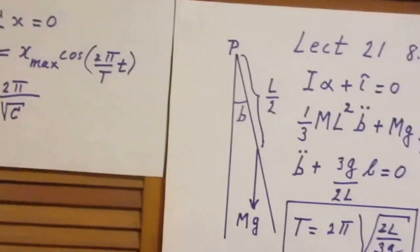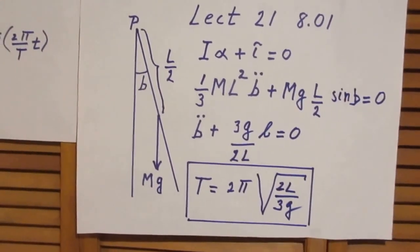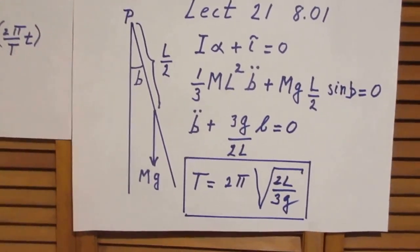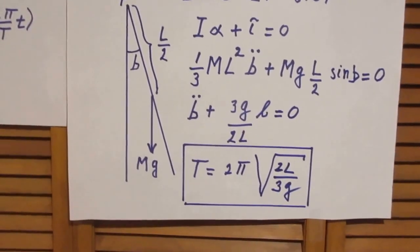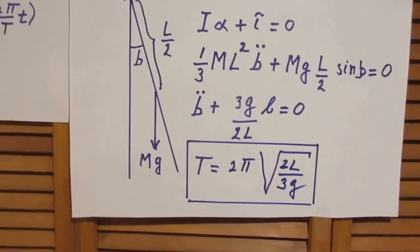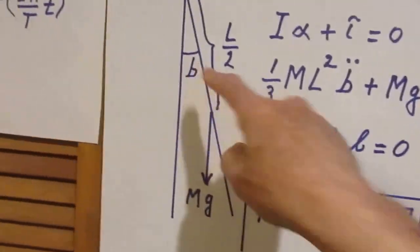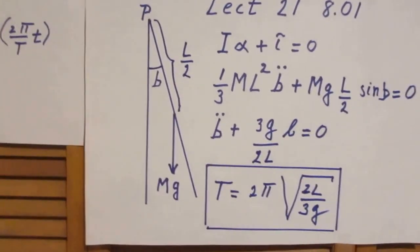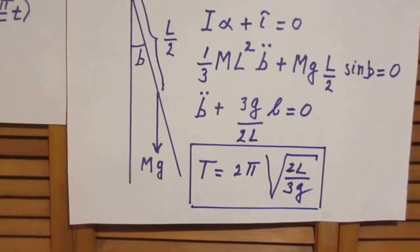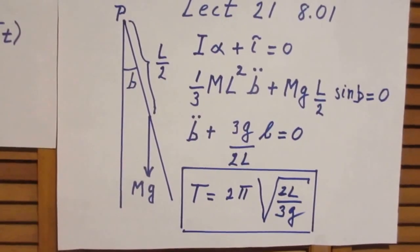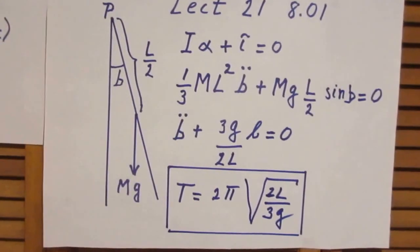So let's now go to our problem of the oscillating rod. You see the rod here, it's oscillating about point P. The distance from P to the center of the rod is L over 2, because the length of the rod is capital L. The angle here I have chosen to call B. Most books call it theta, but I called it B. And then the force at the center of gravity down is capital M times G, acceleration due to gravity.